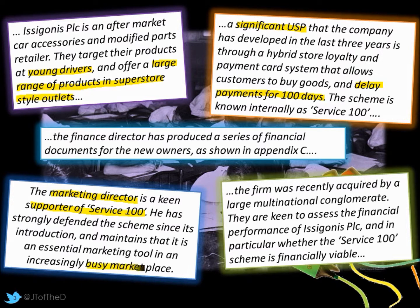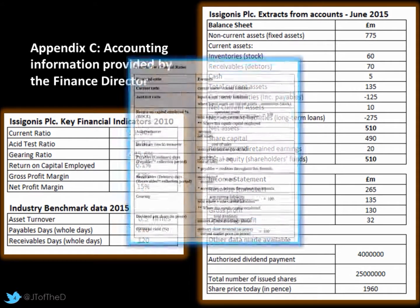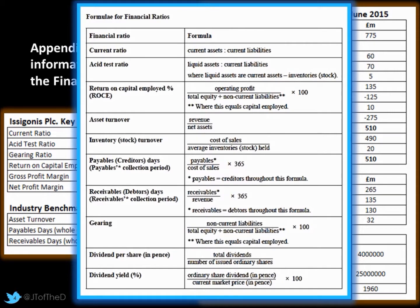They have a large range of products in superstore-style outlets, so we could have quite a bit of stock. That might put more emphasis on the acid test rather than the current ratio, because we are a stockholding business and stock might not be that liquid. Service 100 allows delay of payments for 100 days. The firm has recently been acquired by a large multinational conglomerate, and they want to know whether it's financially viable. The key thing here is not to focus too much on calculations, as you are given the financial ratios data — it's more about interpretation.